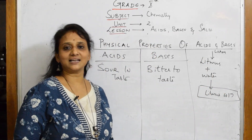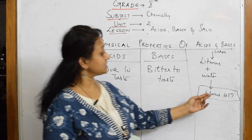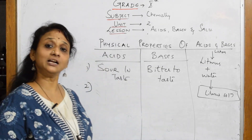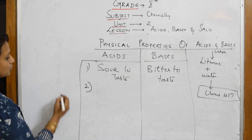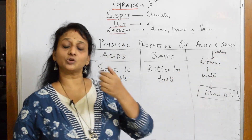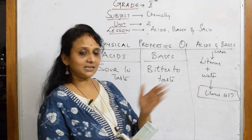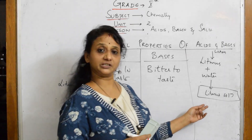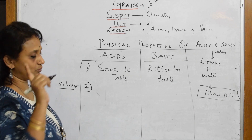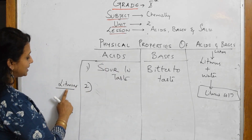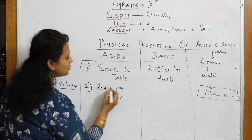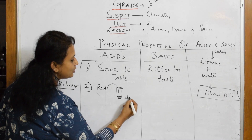Instead of litmus solution, litmus papers are also prepared — red litmus paper and blue litmus paper. Now, for the litmus test with acids: take a test tube with dilute HCl. Take a red litmus paper — remember, the litmus paper should be moist to work. Dip the red litmus paper into the dilute HCl.